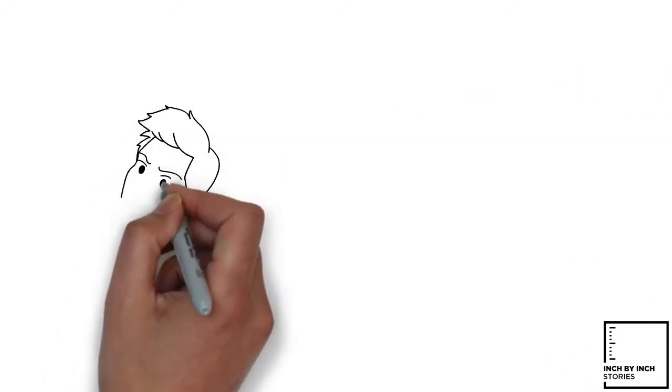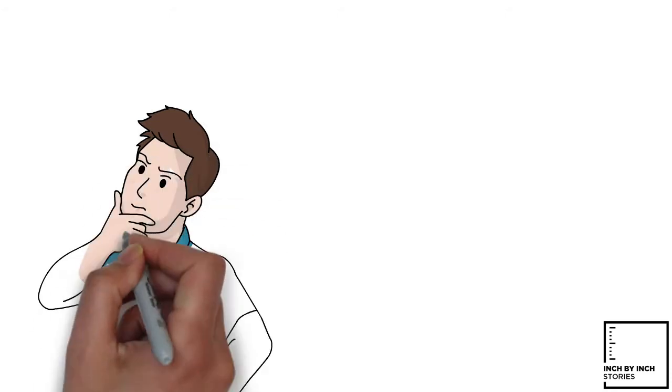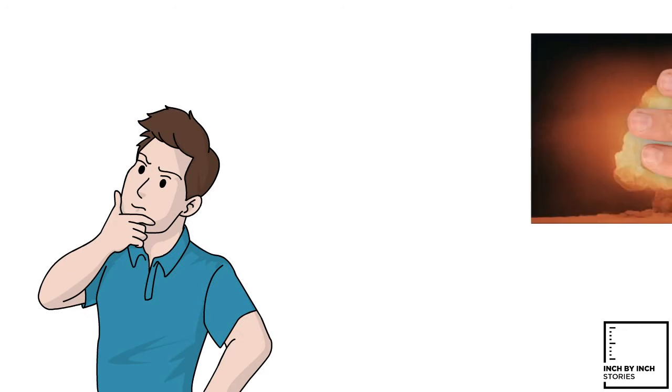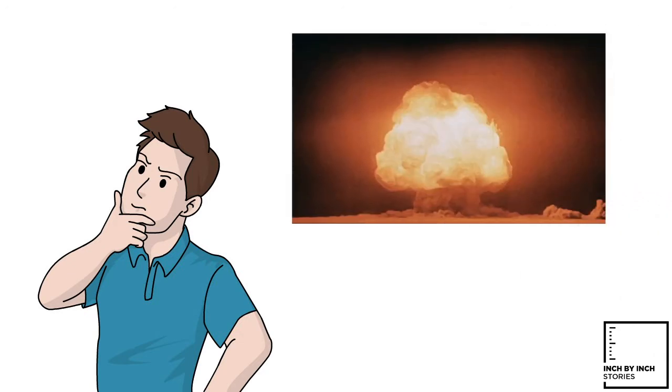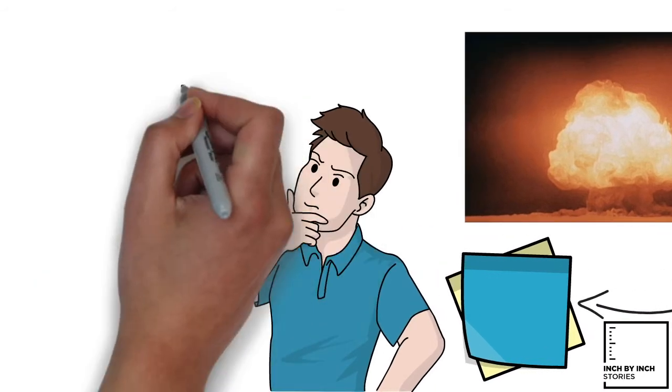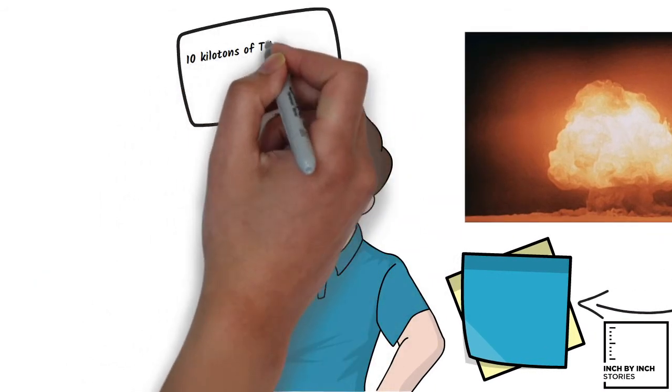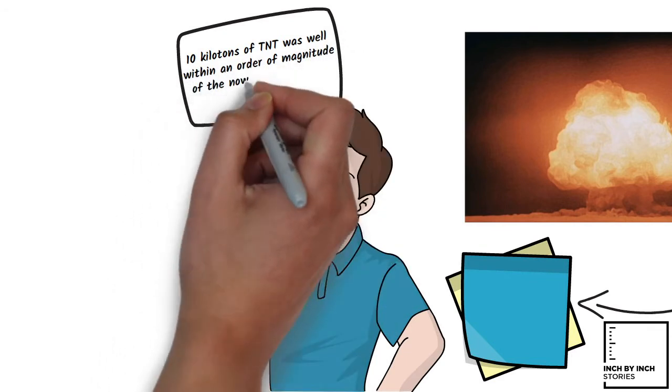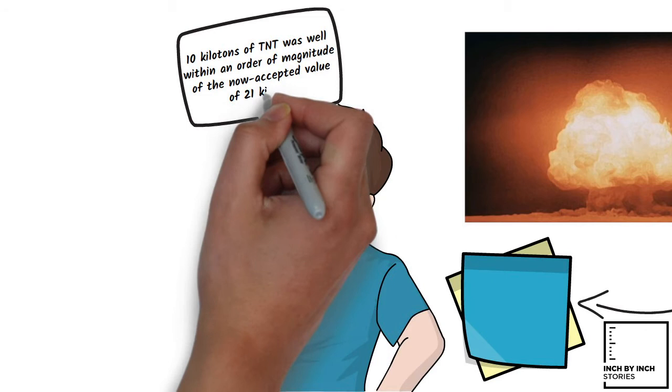Fermi problems typically involve making justified guesses about quantities and their variance or lower and upper bounds. An example is Enrico Fermi's estimate of the strength of the atomic bomb that detonated at the Trinity Test. Based on the distance traveled by pieces of paper he dropped from his hand during the blast, Fermi estimated 10 kilotons of TNT, which was well within an order of magnitude of the now accepted value of 21 kilotons.